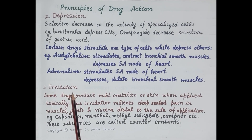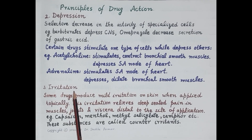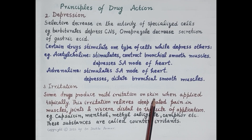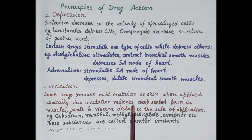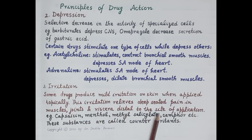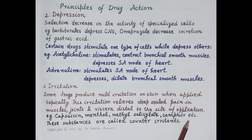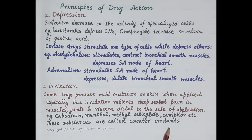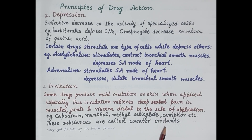Another type of drug action is irritation. Some drugs produce mild irritation on the skin when applied topically, and this irritation relieves deep-seated pain in the muscles, joints, and viscera distal to the site of application. For example, capsaicin, menthol, methyl salicylate, and camphor produce irritation when applied topically and are called counter irritants. A good example is balms or ointments containing menthol and methyl salicylate used for knee and joint pain relief. However, excessive irritation can result in inflammation, necrosis, morphological damage, and loss of function.